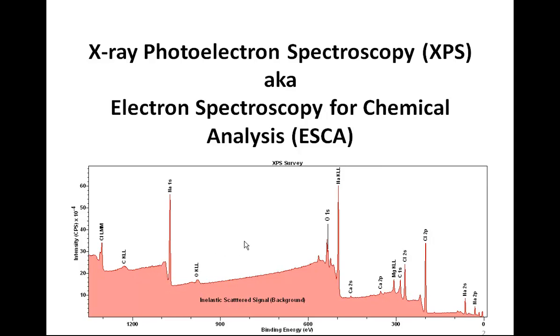This is the origin of the background intensities we see in the spectrum. So the energy spectrum that we're going to analyze in the software involves understanding both the background shapes and also shapes that are associated with these photoemission peaks.